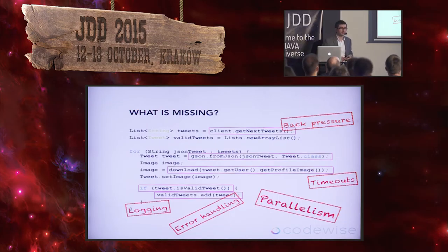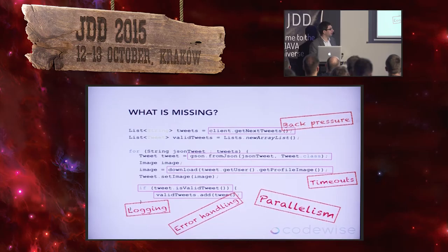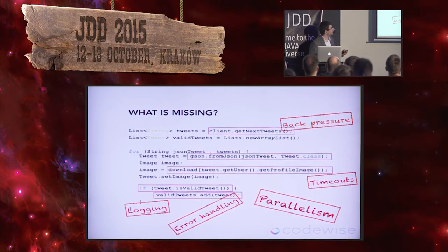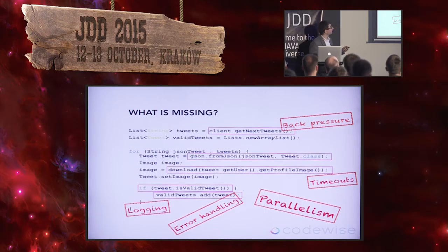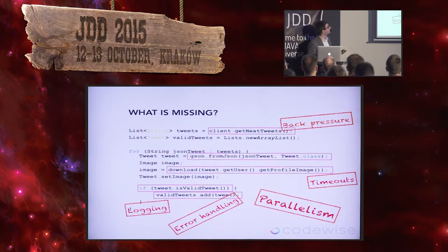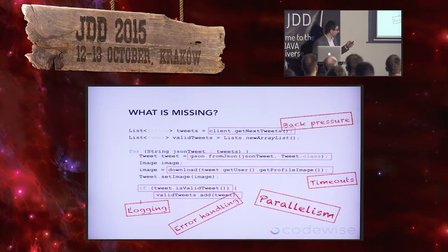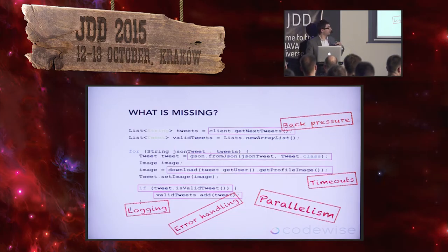There's no backpressure. Backpressure is a concept in RxJava and stream processing — it's quite a new name, but the problem was always there: how do we make sure that a fast producer will not kill or overwhelm a slow consumer? For example, if a client defaults to returning 10,000 tweets at once and they are too big to be processed, the client can run out of memory. Backpressure is the concept of cooperatively deciding how much data the client can accept from the producer.